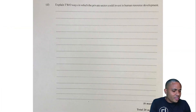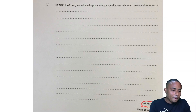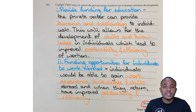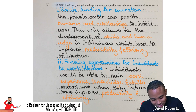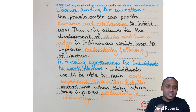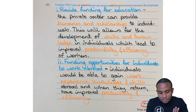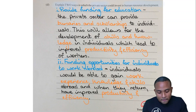Part D: explain two ways in which the private sector could invest in human resource development, for six marks. Because the previous part already asked us to define human resource development, we would not redefine it here — that would be redundant. Each of the two ways should be explained for three marks each, adding up to six marks total.